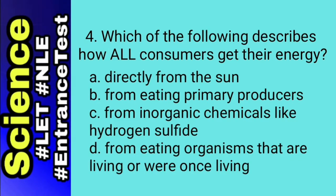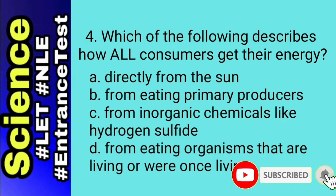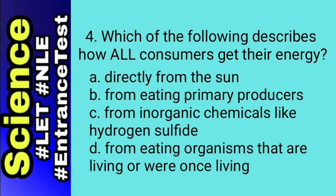For number 4, let's do elimination again. Letter A pertains to primary producers. Letter B may pertain to herbivore or omnivore, but not carnivores. Remember that our question pertains to all consumers. Letter C pertains to primary producers. That's why we are left with letter D. The answer is letter D — from eating organisms that are living or were once living.